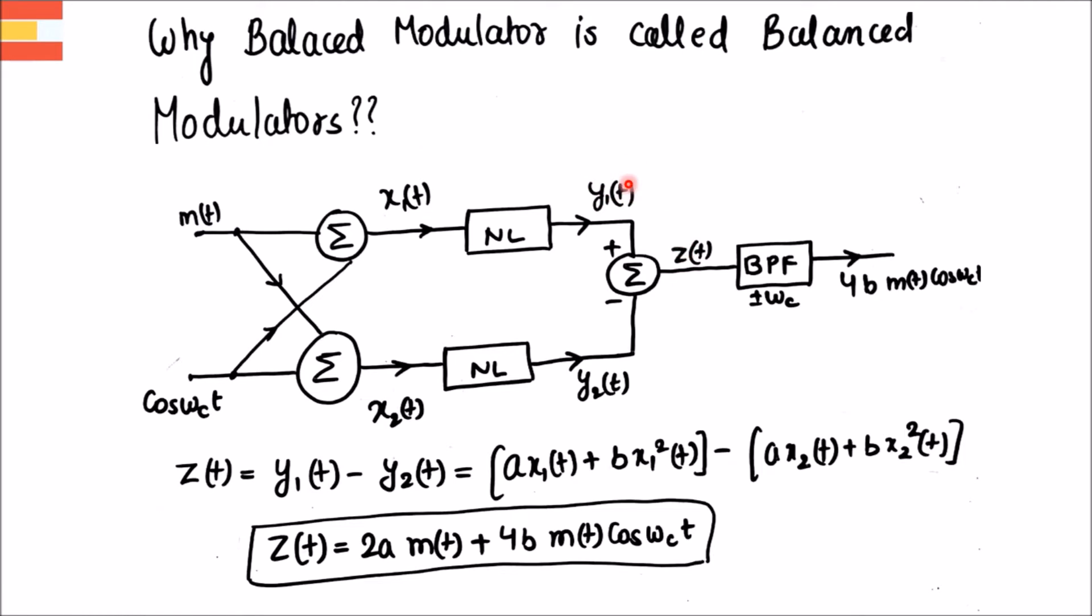Here we are interested in calculating the z(t) that is output of the system. z(t) can be expressed as y1(t) minus y2(t) as you can see by the block diagram. Since y1(t) is the output of a nonlinear device whose input is x1(t) we can write y1(t) as ax1(t) plus bx1²(t). Also y2(t) can be written as ax2(t) plus bx2²(t). When we solve this by applying x1(t) as m(t) plus cos ωc(t) and x2(t) as m(t) minus cos ωc(t), we get z(t) as 2am(t) plus 4b m(t) cos ωc(t).